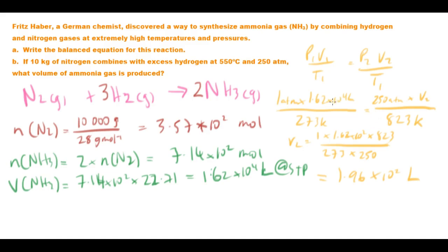Which makes a lot of sense. We had this massive 16,200 litres at STP. However, it's at massive amounts of temperature and massive amounts of pressure. So logically, using our gas relationships, the volume should be much smaller. And that is the problem solved.